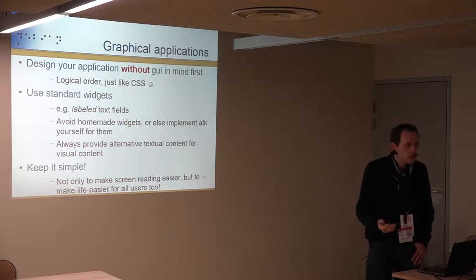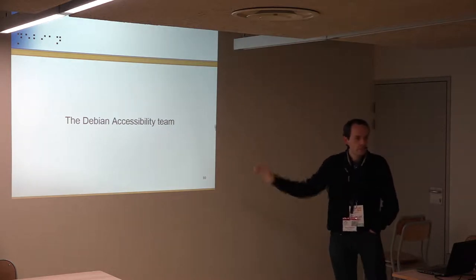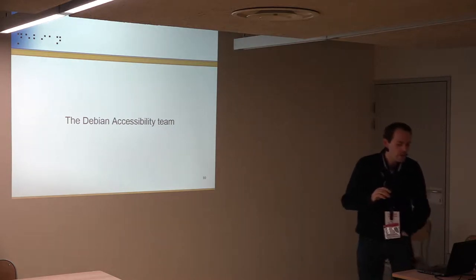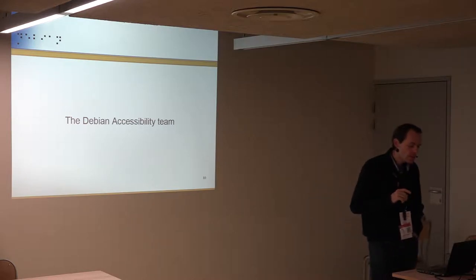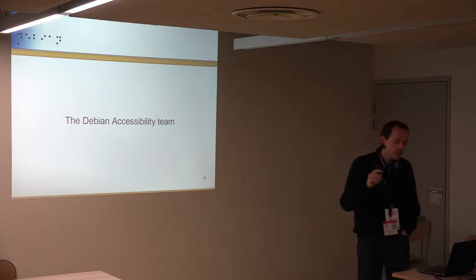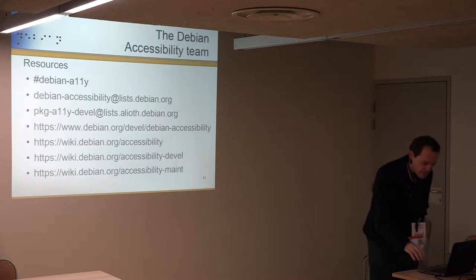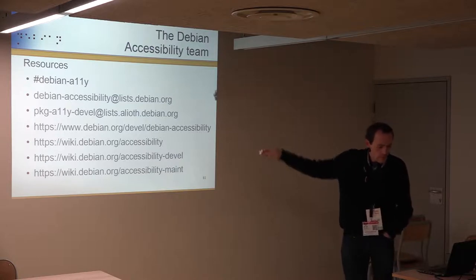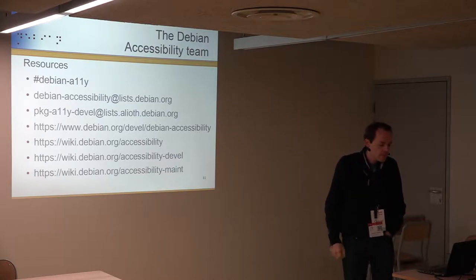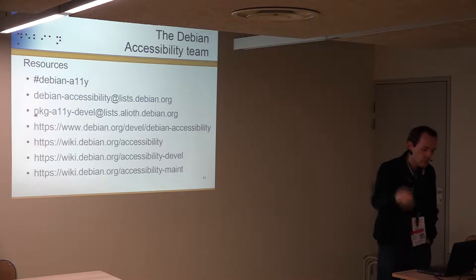That was the general talk about accessibility. Now I'll talk about Debian specifically. The Debian accessibility team was founded quite a long time ago. For resources, there's an IRC channel, a mailing list for discussion, a mailing list for bug reports and upload notifications, and a wiki for the team goals.